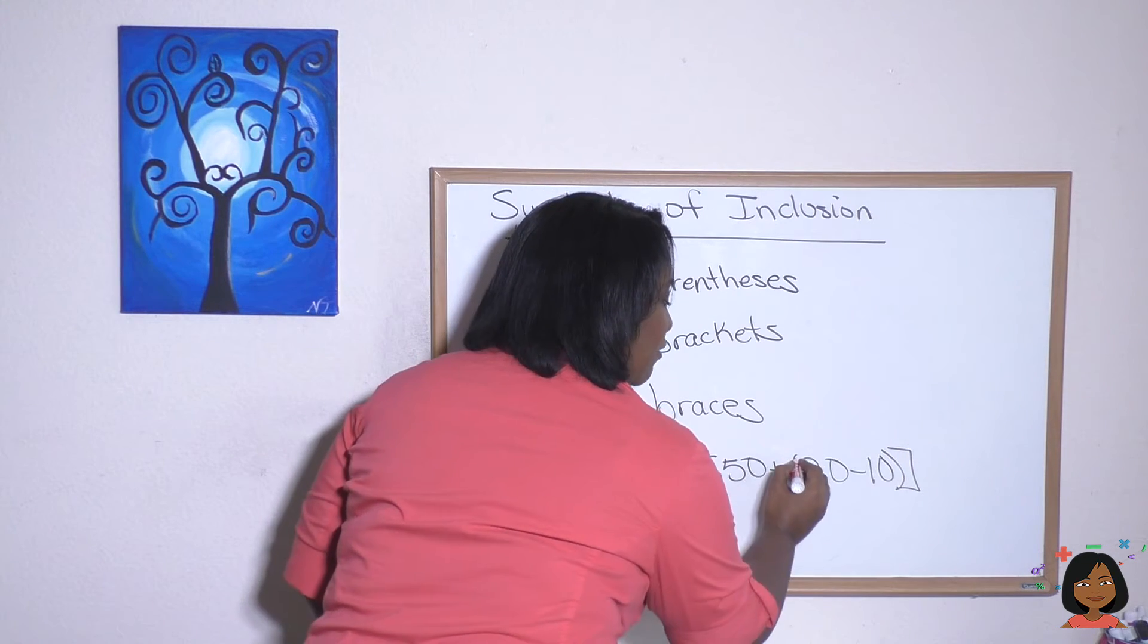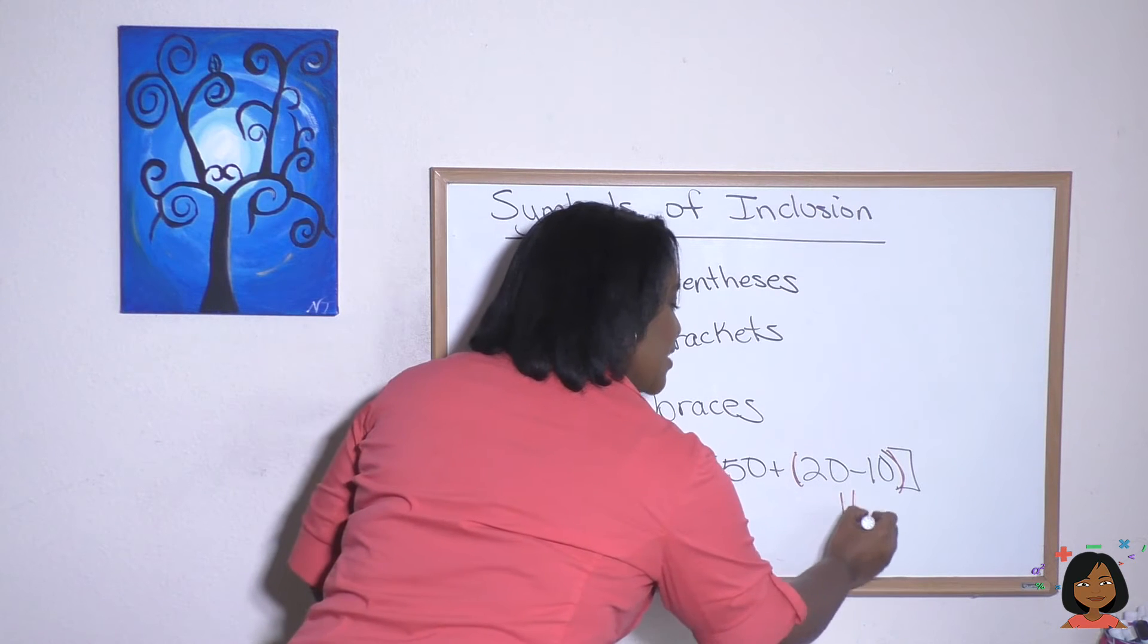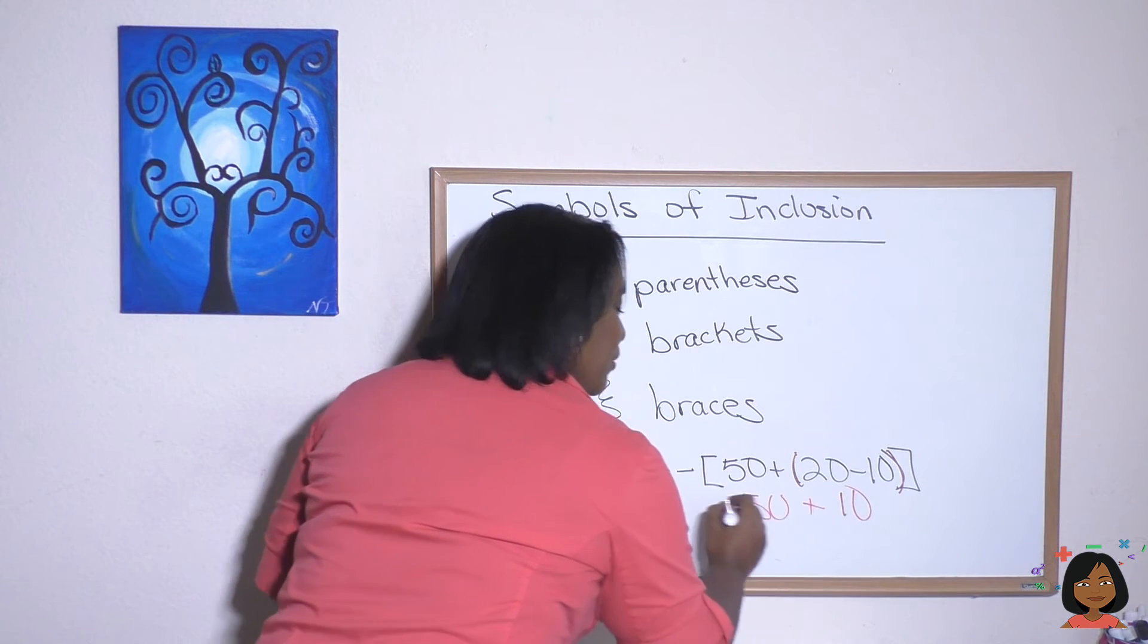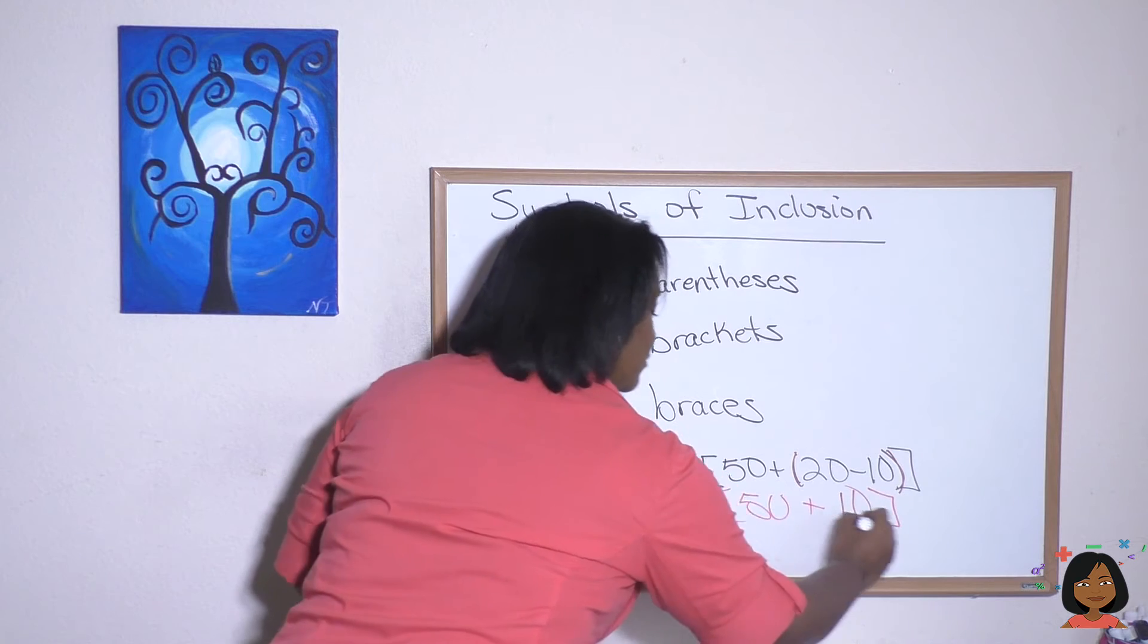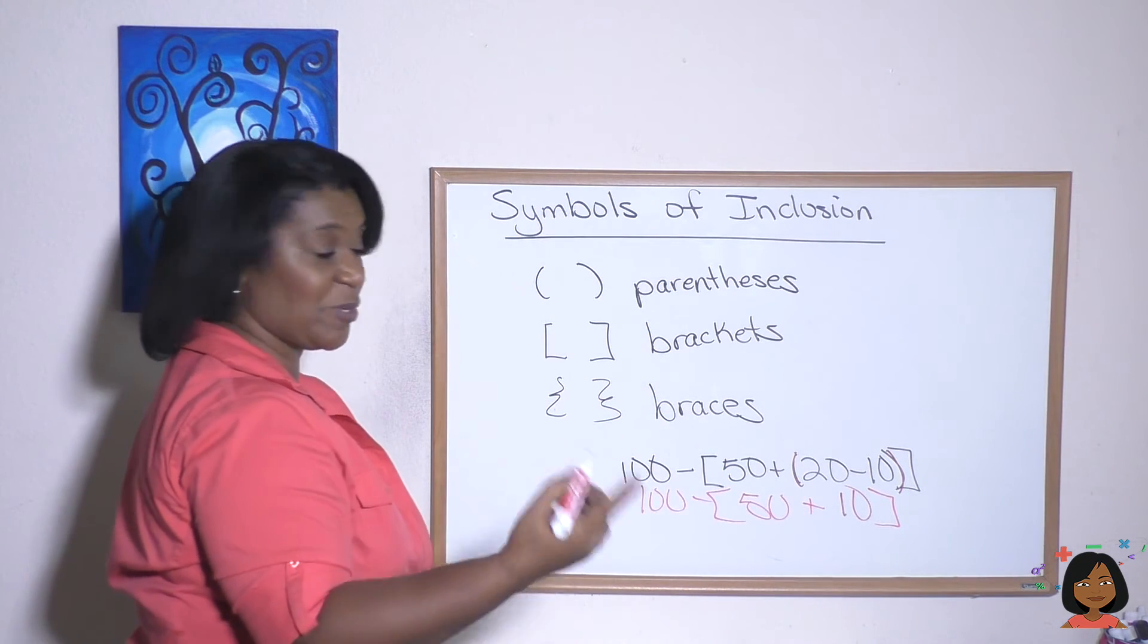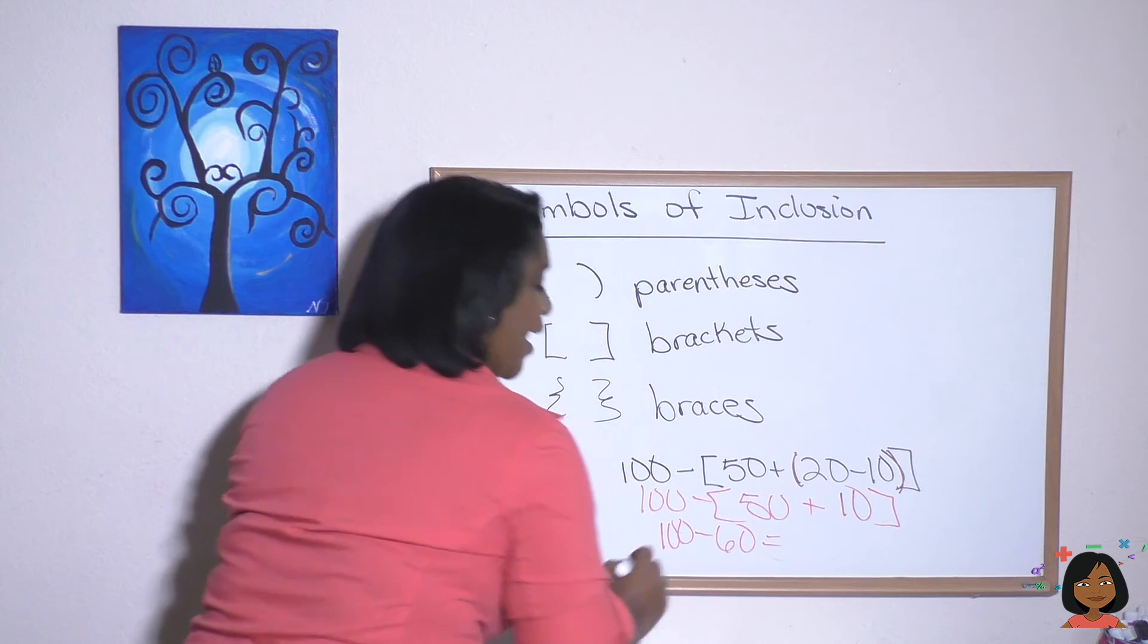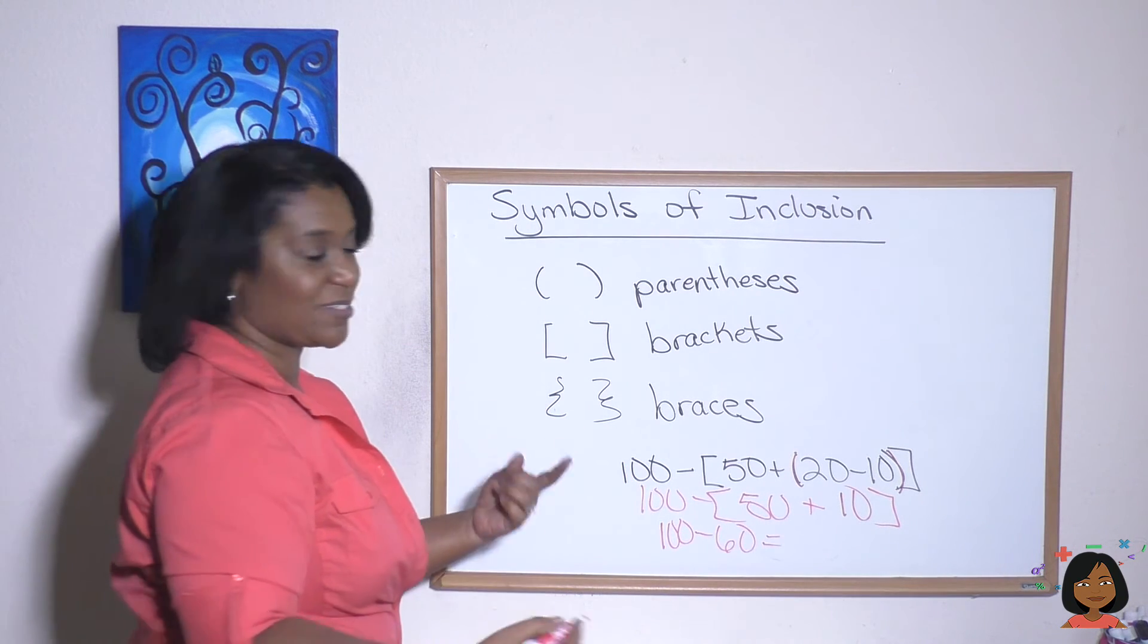So 20 minus 10 we know is 10. Let's rewrite it: 100 minus bracket, 50 plus 10. Next we do the 50 plus 10, which is 60, and then we have 100 minus 60, which brings us to the answer, which is 40.